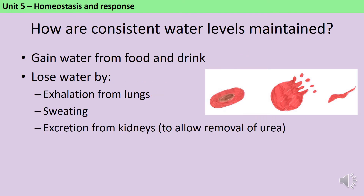In order for consistent water levels to be maintained, the body needs to be taking in and releasing the same amount of water each day. We take water in from our food and drink and we lose it in three main ways: exhaling it from our lungs as a waste product of respiration, sweating from our skin, and excreting it from the kidneys — which is also important because it allows us to remove a waste product called urea.